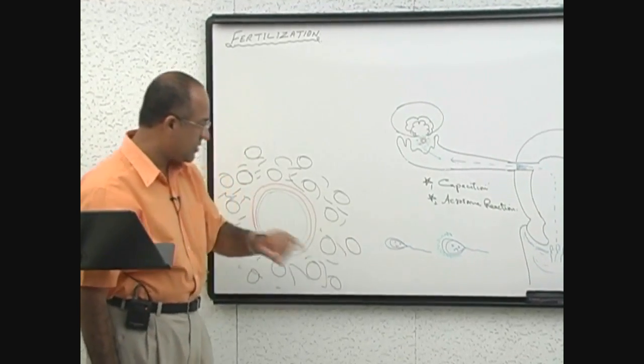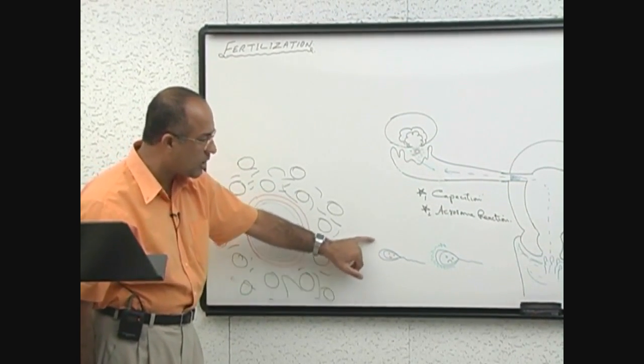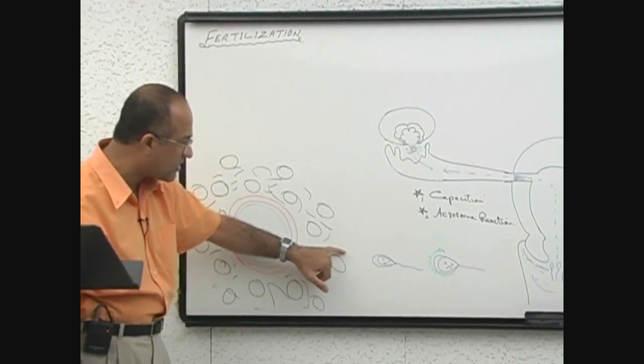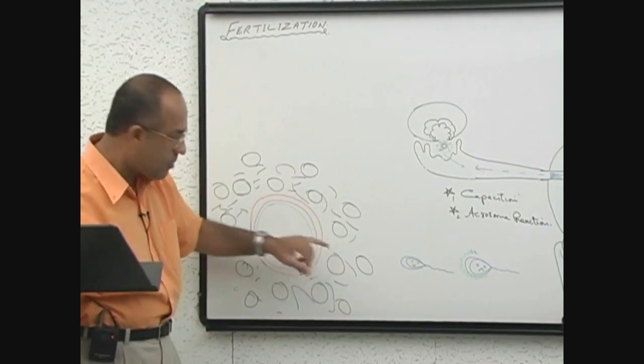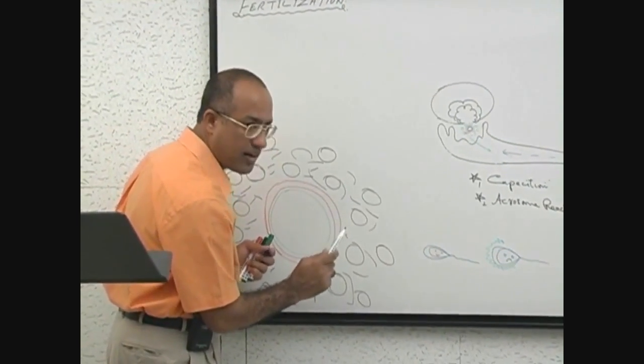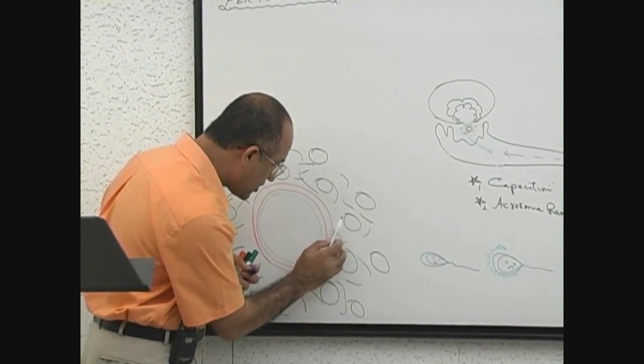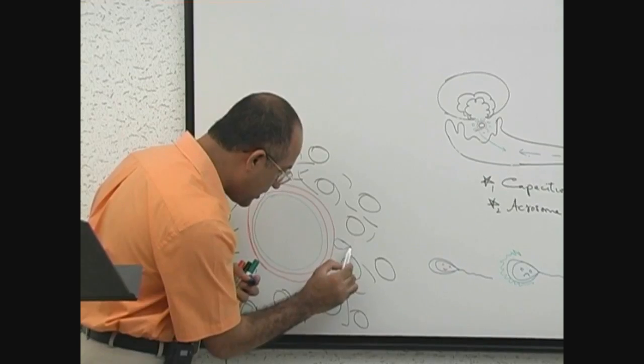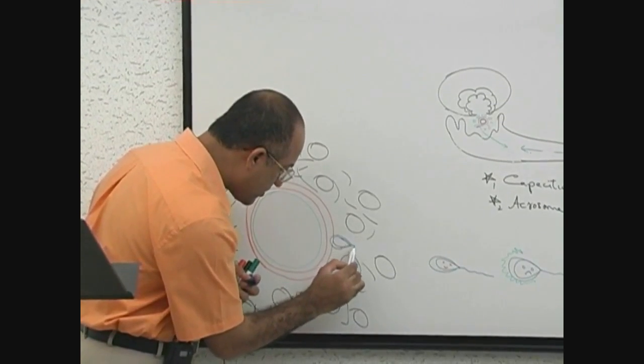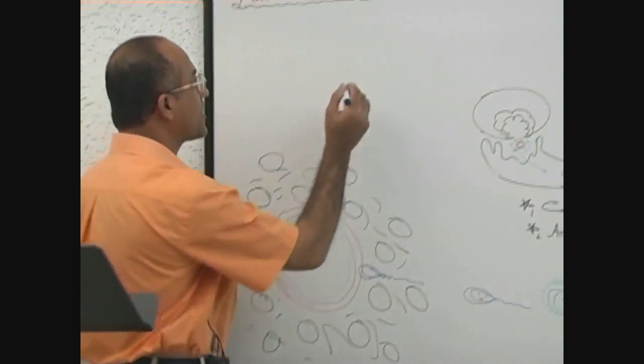Once it is capacitated, its glycoprotein and seminal plasma proteins are removed, and it will pass easily through. But as soon as it touches the zona pellucida, it undergoes another reaction. Let me show that reaction.